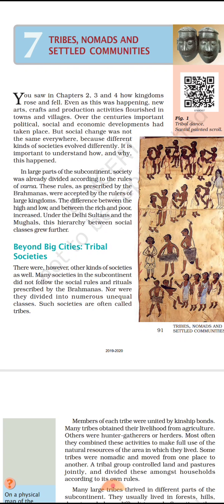The others were settled communities. Tribes retained their freedom and preserved their separate culture, different from that of the caste-based societies, by living in forests, hills, deserts and places that are difficult to reach. In spite of all these differences and clashes, the caste-based and the tribal societies depended on each other for various needs. Thus, due to such a relationship of conflict and dependence, both the societies changed.